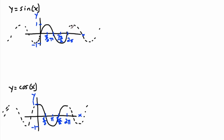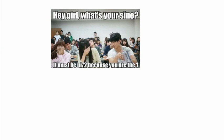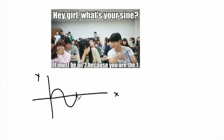That's really all you need — you can draw these by hand wherever you need them. Later we'll learn about transformations: how to stretch the graph vertically or horizontally, and flip it across the x or y axis. Here's a nerdy joke: 'Hey girl, what's your sign? It must be pi over 2 because you are the one.' That's because at sine of pi over 2, y equals 1.